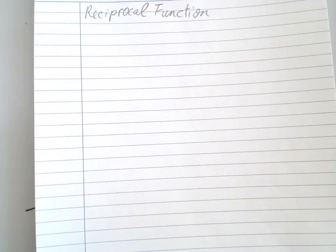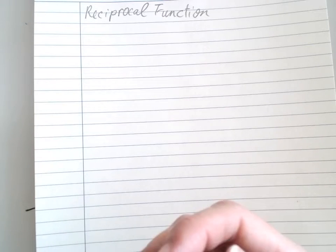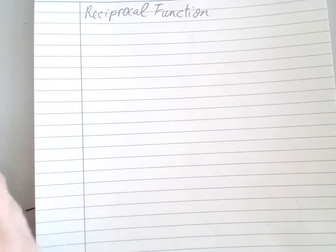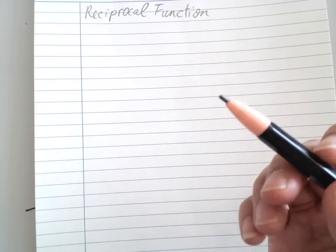Alright, reciprocal function. A reciprocal function is actually a fraction function. The main idea of this part is finding the asymptotes. Asymptotes are the lines which the function never touches.